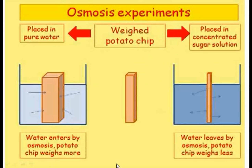Osmosis can be demonstrated using pieces of plant material such as a potato chip. Placing it in pure water, the potato chip grows and gains mass as water enters the potato cells. If the chip is placed in a strong sugar solution, however, the chip shrinks and loses mass as water leaves the cell by osmosis.